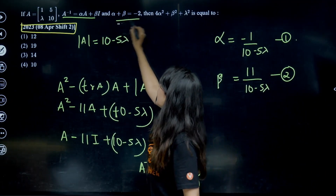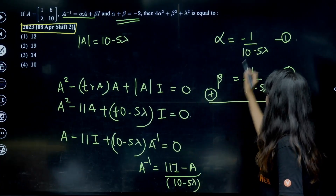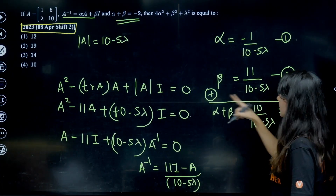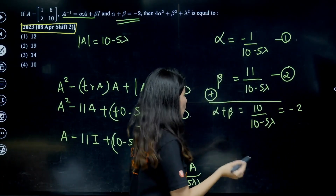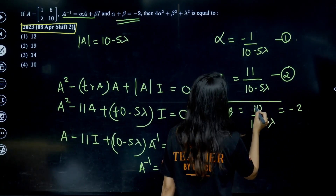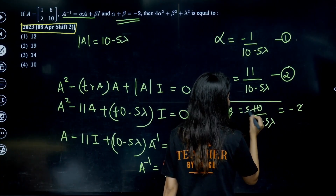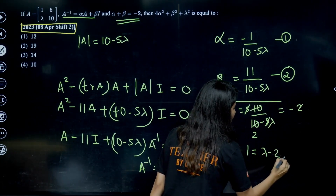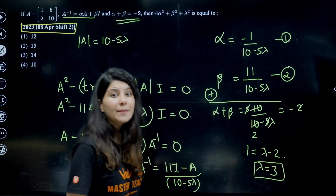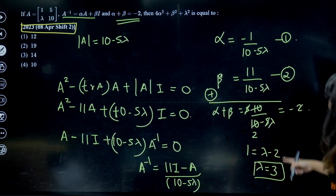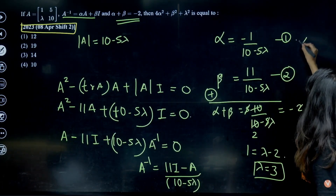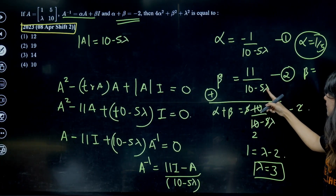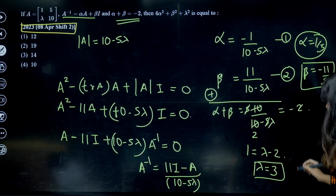Since α + β = −2, we add the two expressions: (−1 + 11)/(10 − 5λ) = 10/(10 − 5λ) = −2. Solving: 10 = −2(10 − 5λ) → 10 = −20 + 10λ → 10λ = 30 → λ = 3. With λ = 3: α = −1/(10−15) = −1/(−5) = 1/5, and β = 11/(−5) = −11/5.